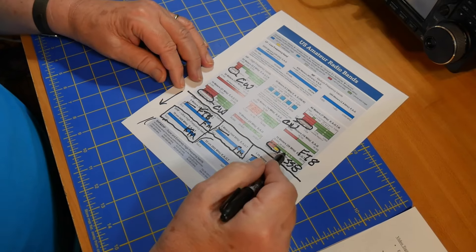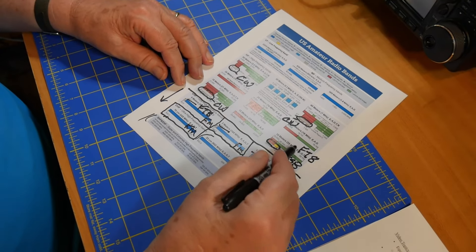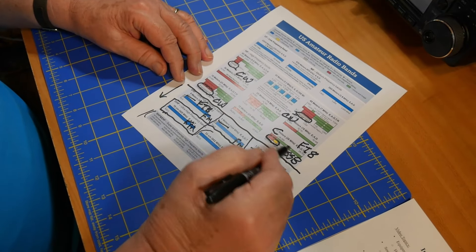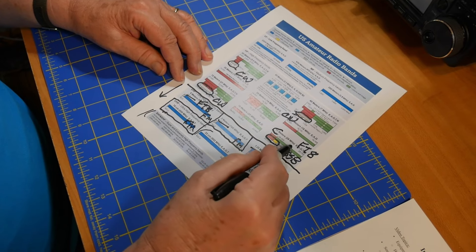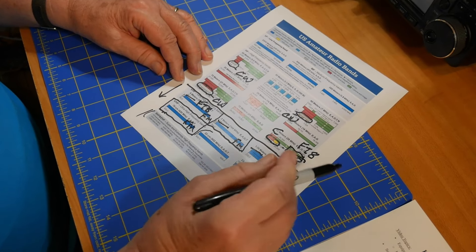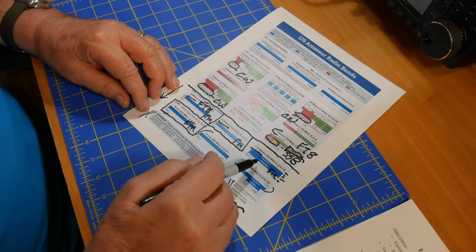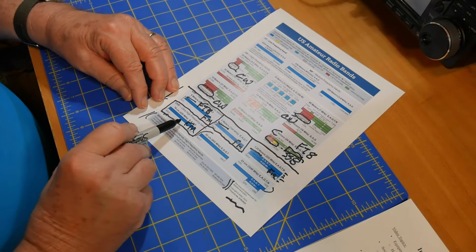Now, the problem over here on 10 meters is you do not have FM privileges. The FM privileges are up here and are reserved for other classes of license. So here are your privileges.